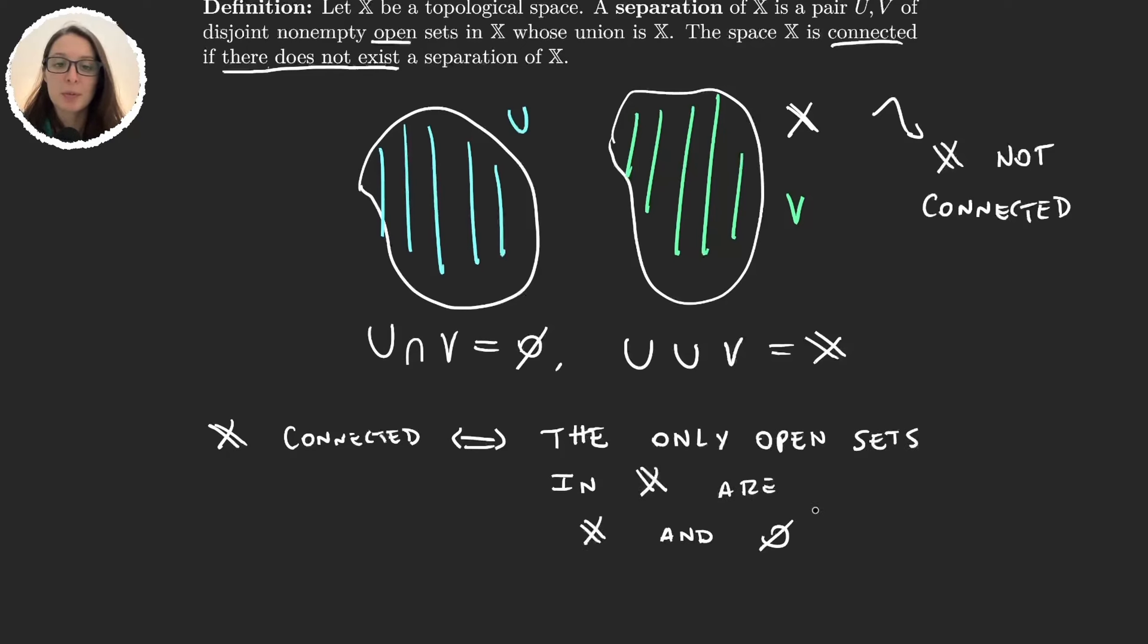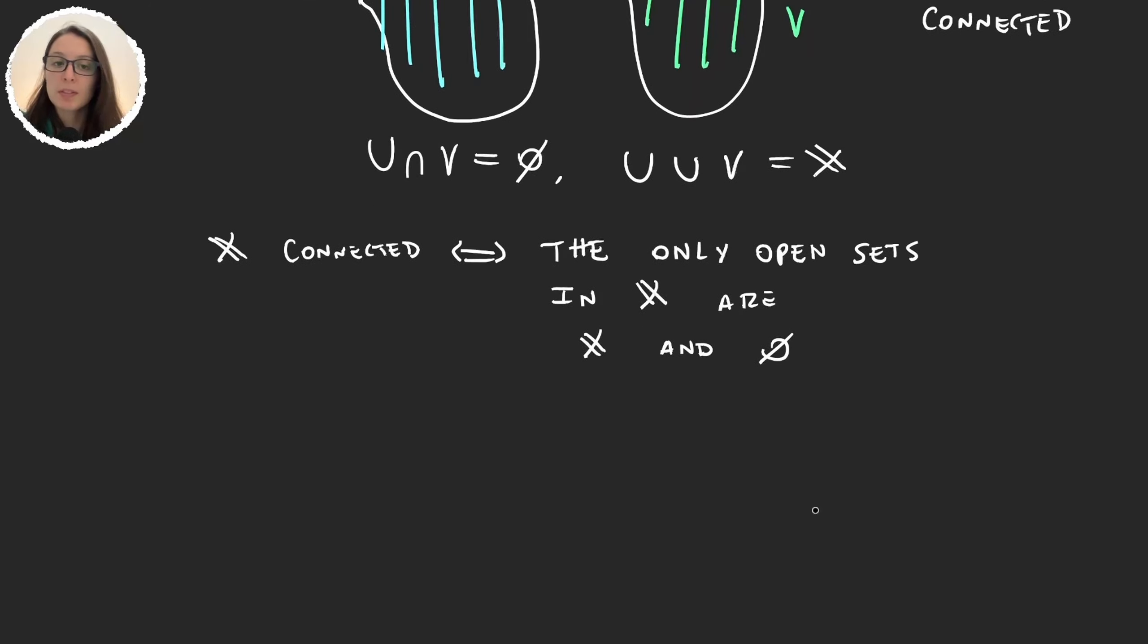So immediately from here we get an example. Given some set X, if we consider the trivial topology, well it's obvious that this topology satisfies this property. The only open sets are the empty set and the set X itself and so this space is connected.